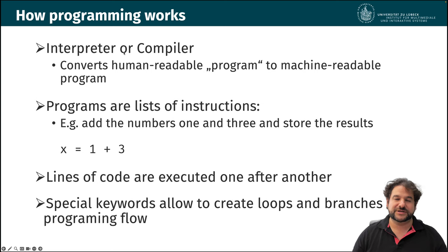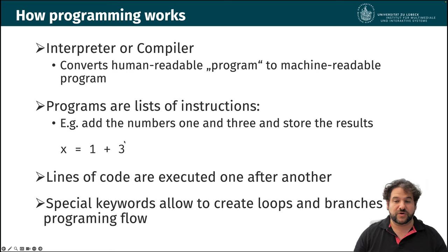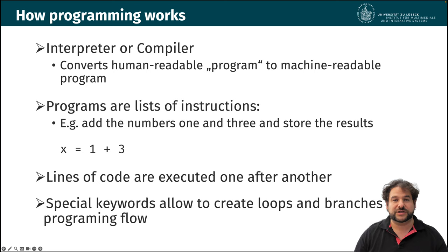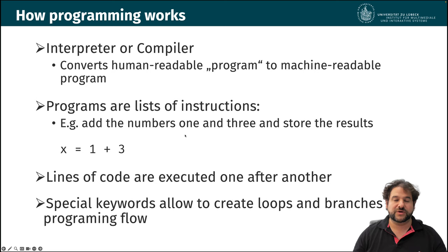Both an interpreter and a compiler convert our human-readable program to a machine-readable program, because computers work with electricity, zeros and ones, and underneath the hood there's a lot of translation going on. At the most basic level, programs are lists of instructions — for example, add the numbers one and three and store the result in a variable called x. Every instruction is executed before the next line, so lines of code are executed one after another.